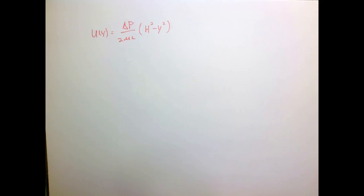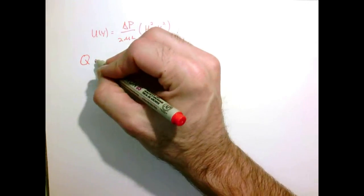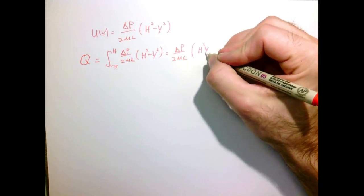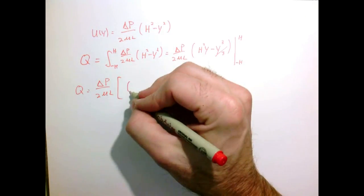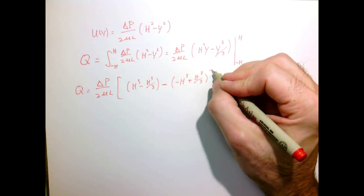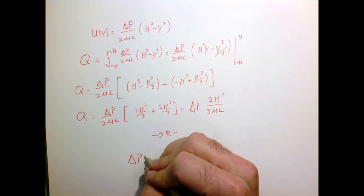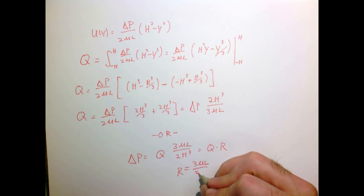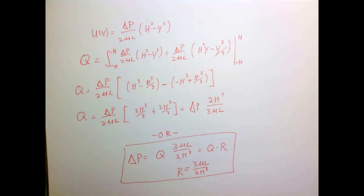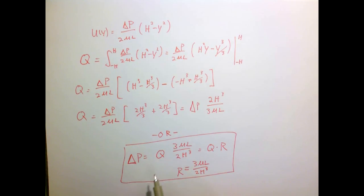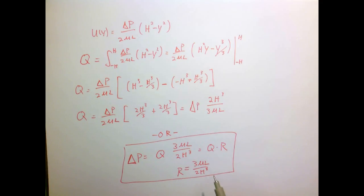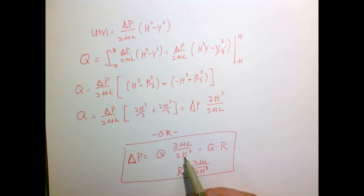Taking the parabolic velocity profile and integrating it across the domain gives the total volumetric flow rate Q. The final result takes a form analogous to Ohm's law, V = IR: pressure drop delta p is like voltage, volumetric flow rate Q is like current, and the prefactor is the hydraulic resistance. The resistance increases linearly with viscosity and channel length, and as one over h cubed — so halving the channel height increases the flow resistance by a factor of eight.